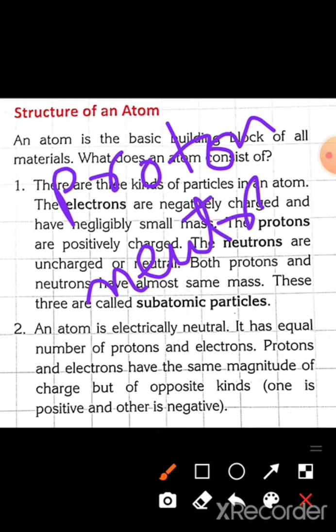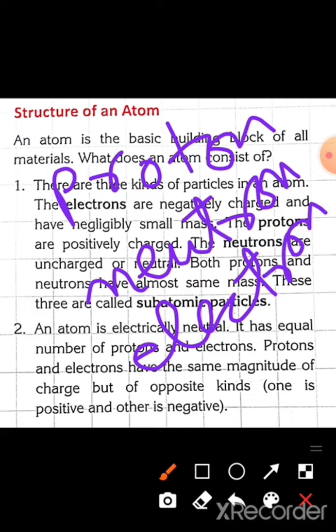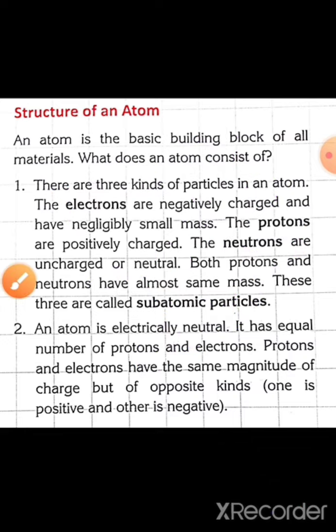There are three types of subatomic particles: first, proton; second, neutron; and third, electron. The central part of the atom is called the nucleus, and it is made up of two subatomic particles named protons and neutrons.